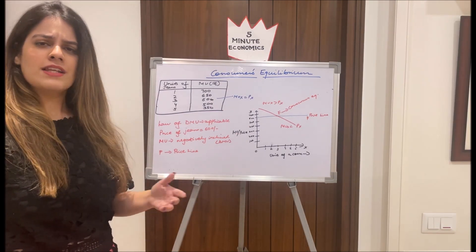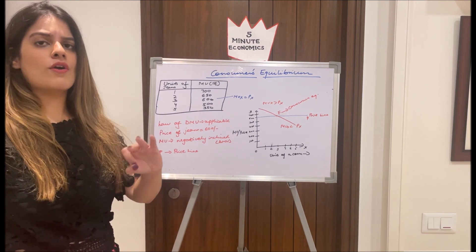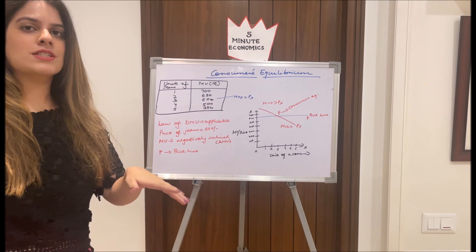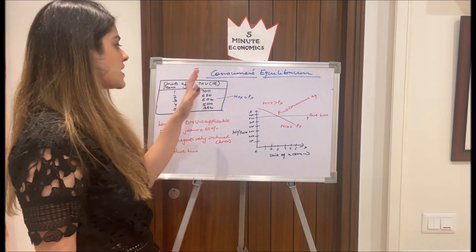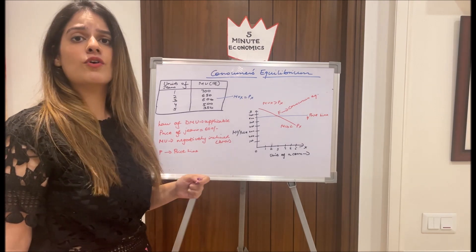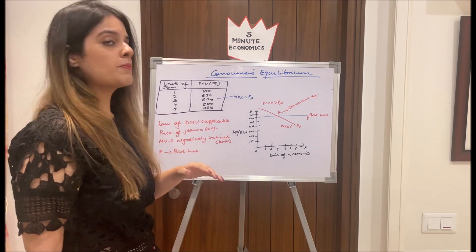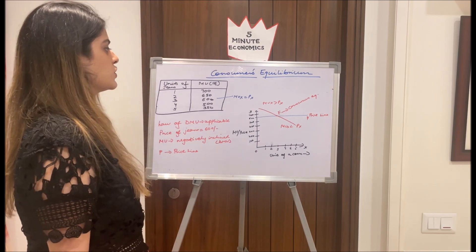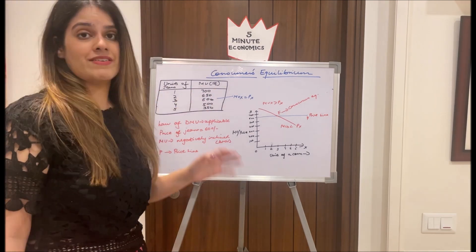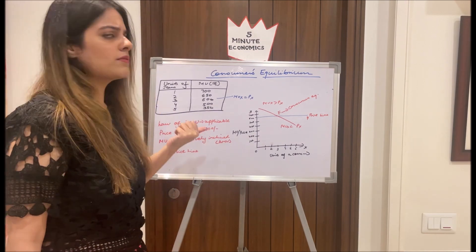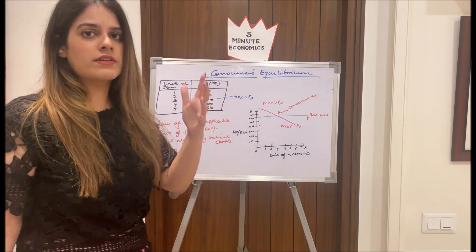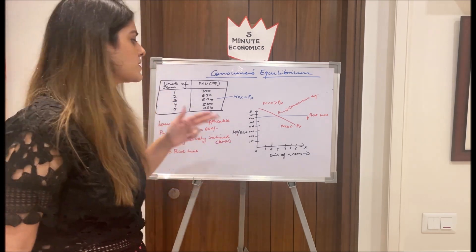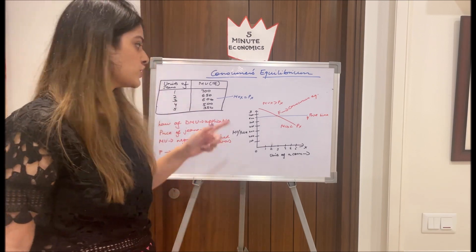Now let's apply this using a schedule. We're looking at jeans — the price of one pair is assumed to be six hundred rupees. When we buy the first pair of jeans, we get a marginal utility of seven hundred utils. Since we're getting more utility than the price, we want to buy more. The second pair gives us six fifty utils — still more than six hundred — so we keep buying.